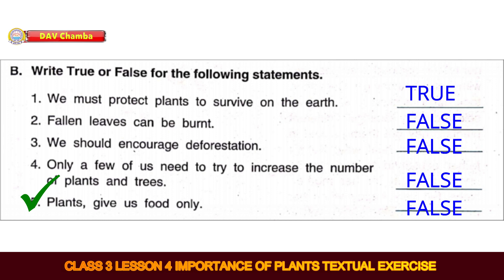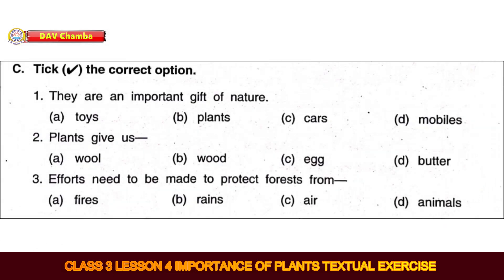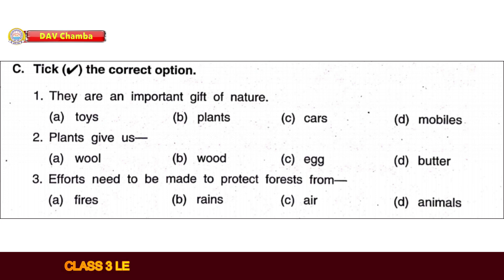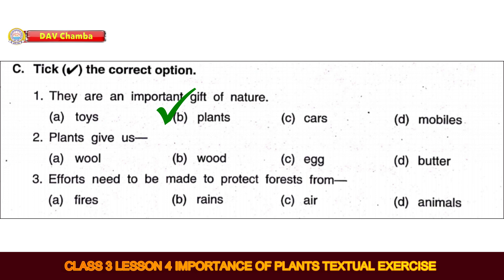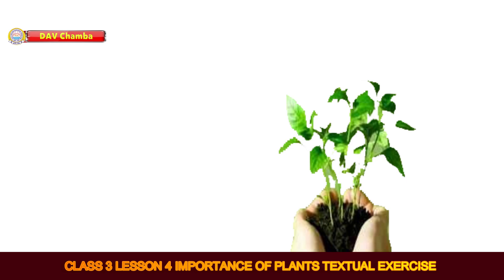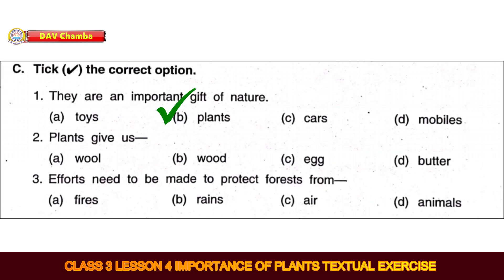Next, Part C — Tick the correct option. First: They are an important gift of nature. Options: Toys, Plants, Cars, Mobiles. The correct option is Plants. Second: Plants give us dash. Options: Wool, Wood, Egg, Butter. The correct option is Wood.